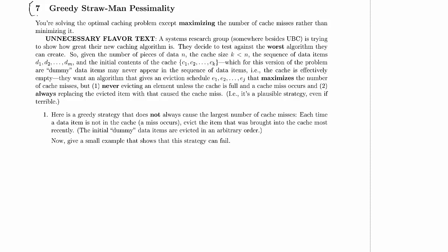They will never appear in the sequence. They want an algorithm that gives an eviction schedule e1, e2, and so on and so forth up to ej, saying when we're going to evict what, and it's going to maximize the number of cache misses without ever evicting an element unless the cache is full so there's none of these dummy items left.